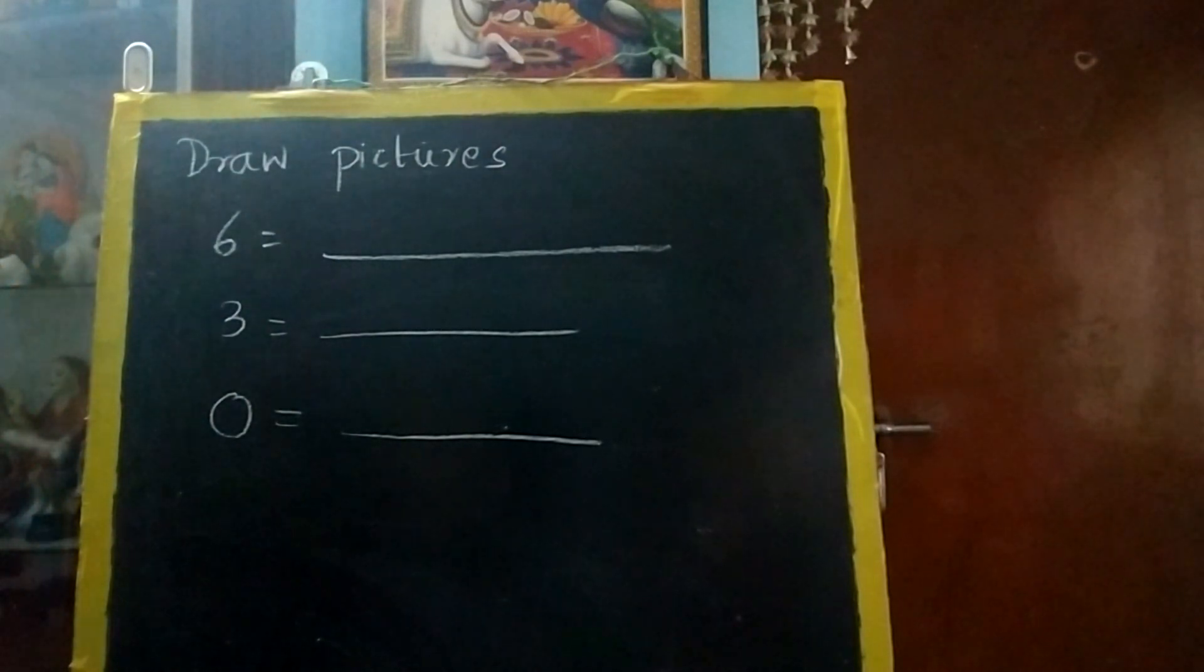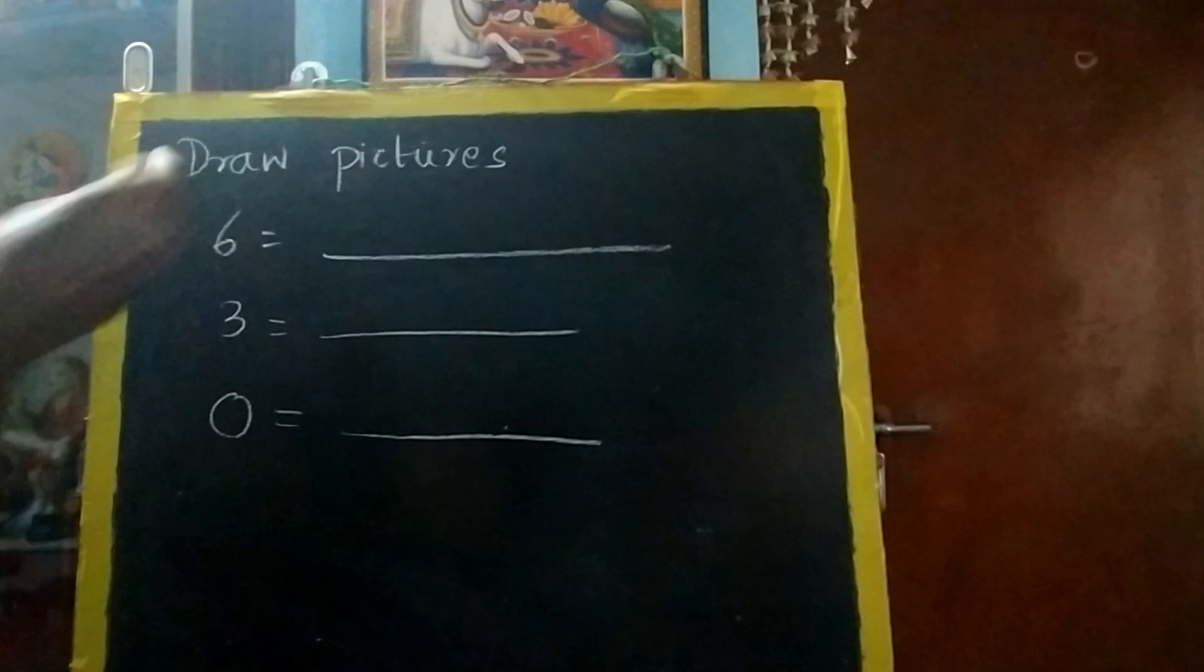Now number is given. You have to draw pictures according to the given number. What number is this? 6. It means you have to draw 6 pictures. It can be anything.